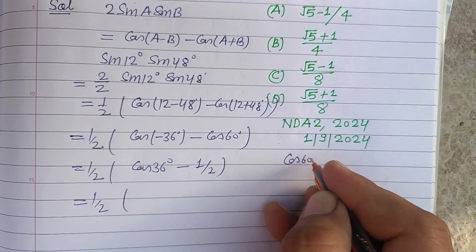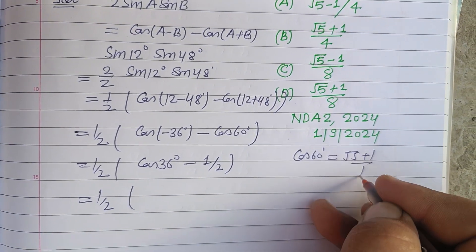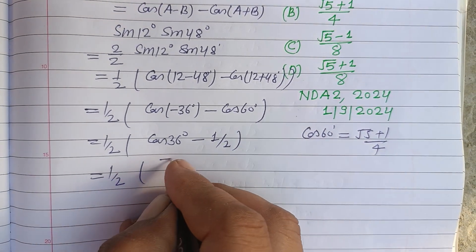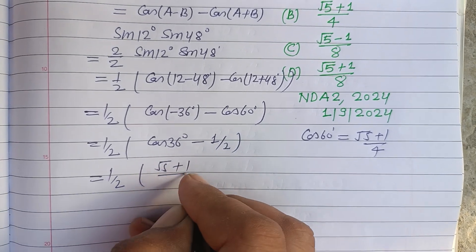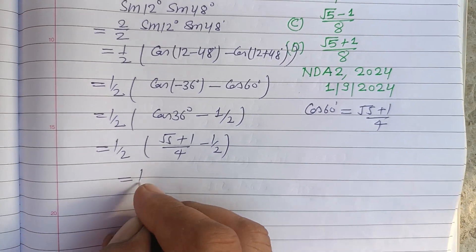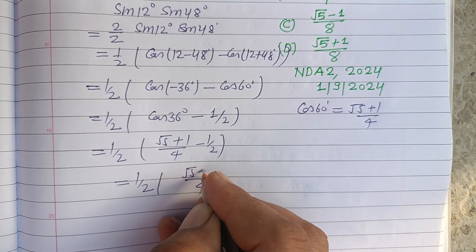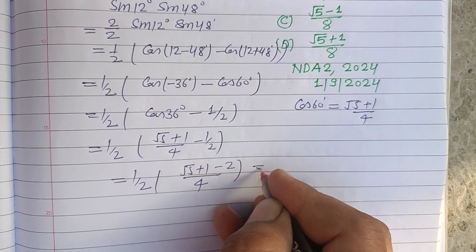which is (√5 + 1)/4. So putting this value (√5 + 1)/4 minus 1/2, this will be 1/2. 4 is LCM. (√5 + 1) minus 2, so this is